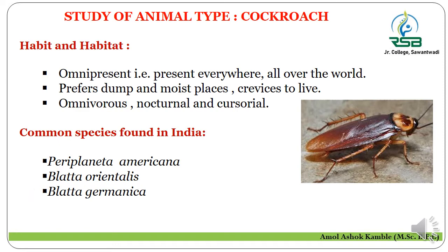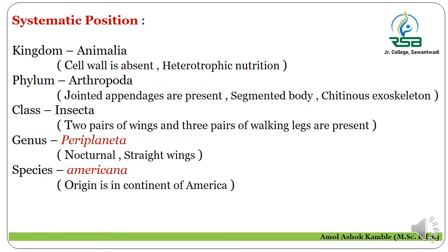Now let us discuss the systematic position, that is the classification of the cockroach. The kingdom is Animalia. The reason is that the cell wall is absent, and it shows the heterotrophic mode of nutrition — it depends on other organisms for its food material.